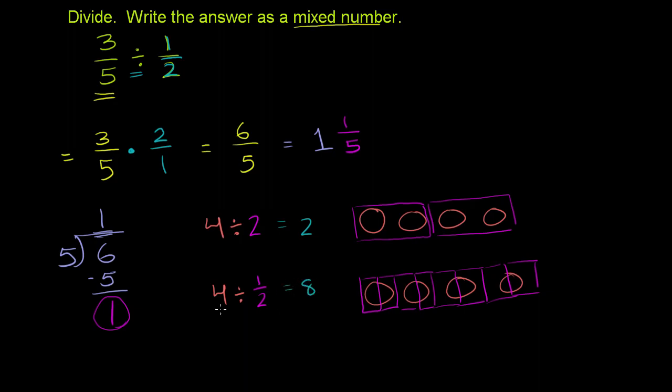And notice, now each of the objects became two groups. So you could say, how many groups do you have? Well, you have four objects, and each of them became two groups. Each of them became two groups, and so you also have 8. So dividing by 1 half is the same thing as multiplying by 2. And you could think about it with other numbers, but hopefully that gives you a little bit of an intuition.